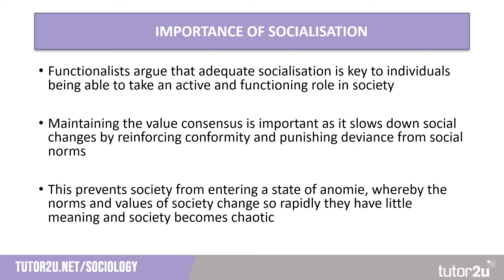Functionalists argue that socialisation is not just important for the individual, but for society as a whole. Whilst adequate socialisation enables individuals to take on their roles as fully functioning members, there are wider benefits. Socialisation, and in particular the value consensus, is key to ensuring that society does not undergo rapid social changes that could destabilise it. Socialisation reinforces ideas of conformity and obedience to authority, whilst punishing deviant behaviours through social disapproval — what is seen as informal social control. This prevents society from descending into anomie, a state of normlessness where there is disagreement on what values individuals should hold.